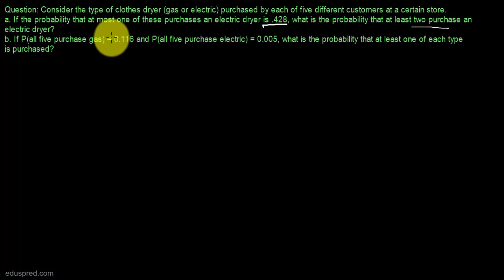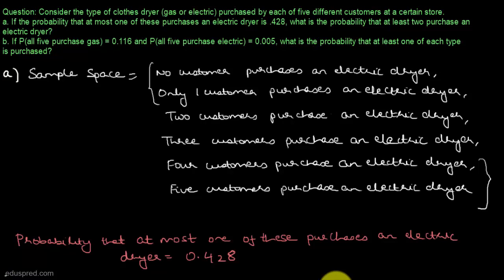To solve part A, first of all, let us write the sample space of this experiment. As you can see here, this is how the sample space of this experiment looks like. Note that in this case, I have not written the sample space in terms of outcomes; I have written the sample space in terms of events. So the sample space consists of these six events and there are no other events that can happen.